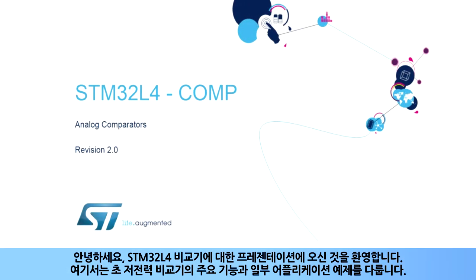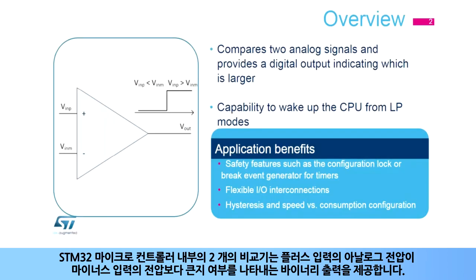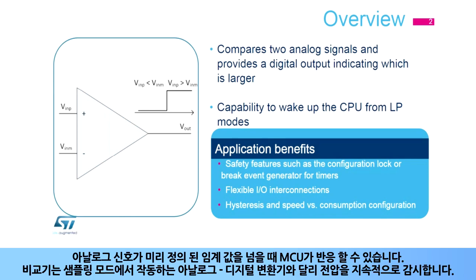Hello and welcome to this presentation of the STM32L4 comparators. It covers the main features of the ultra-low power comparators and some application examples. The two comparators inside the STM32 microcontroller provide a binary output which indicates if the analog voltage on the plus input is larger than the voltage on the negative input, allowing the MCU to react when the analog signal crosses a predefined threshold.